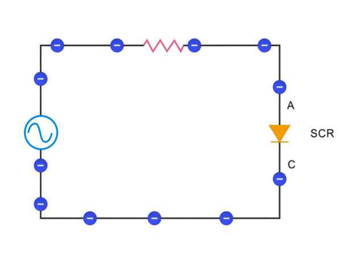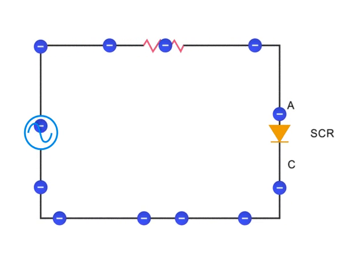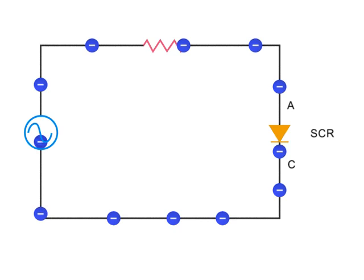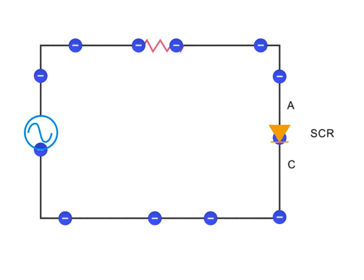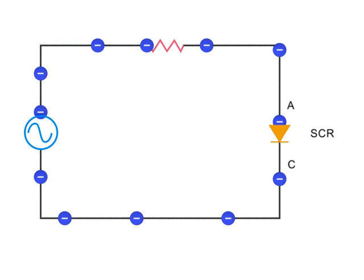However, unlike other diodes which only perform an on and off function, a SCR can regulate a flow of electricity with gradation when forward biased.